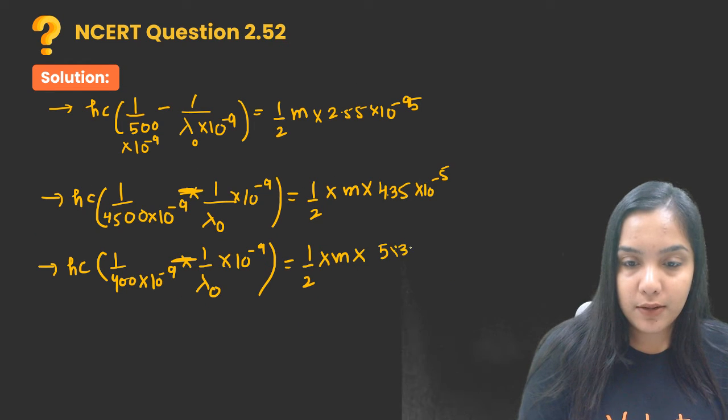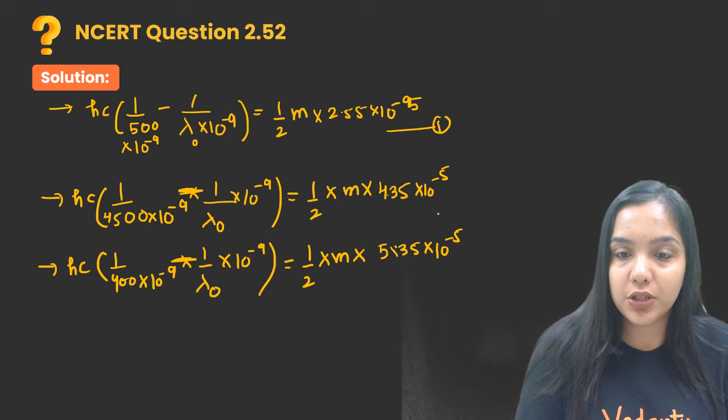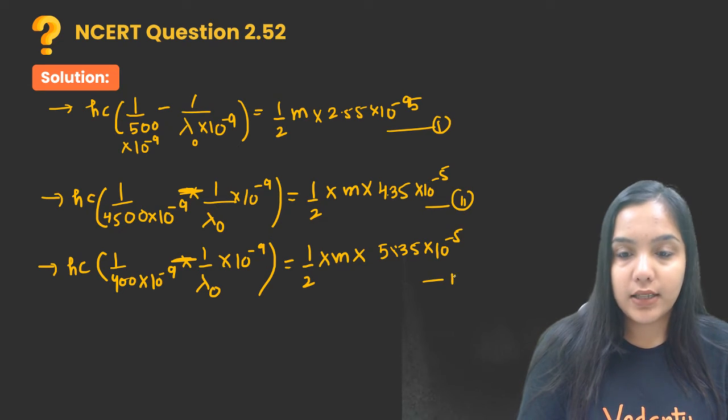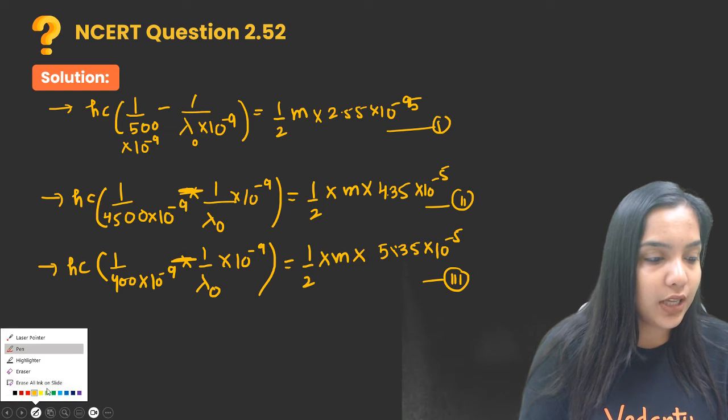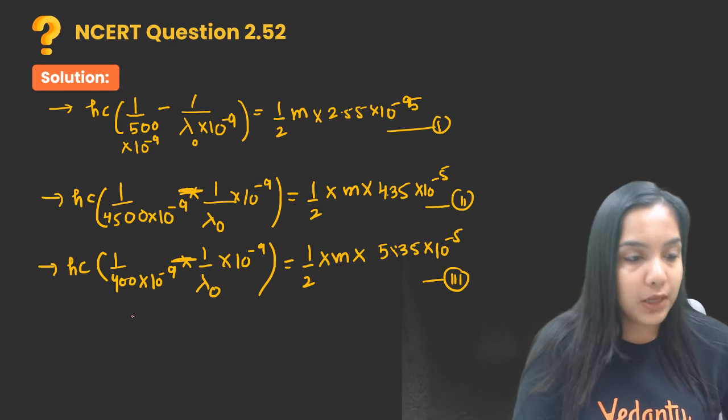Now we have three equations 1, 2, and 3. We have to arrange them or divide them in a way that we are getting a value of lambda. So let's divide 2 by 1.